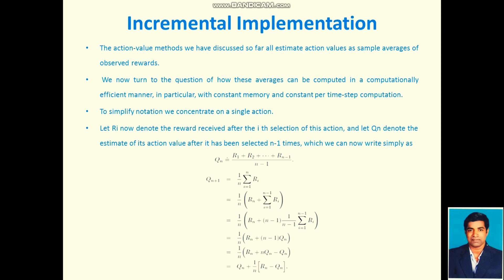We can rewrite this mathematical expression: 1 by n, we take rn out, plus sum of i equals 1 to n minus 1, Ri.